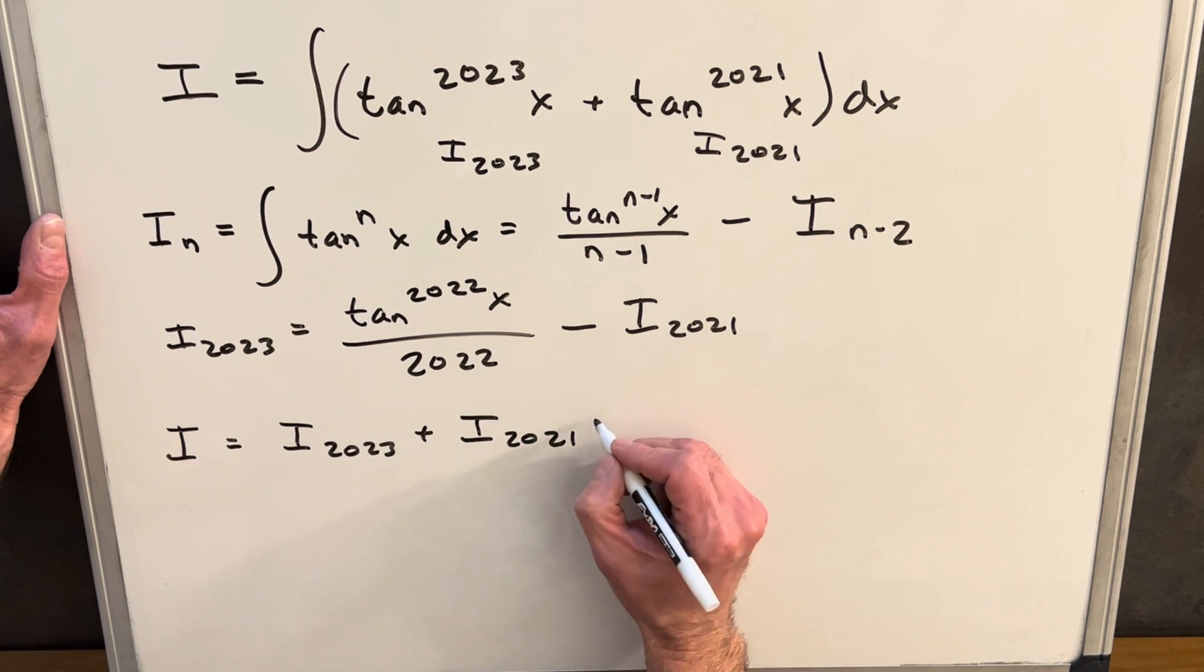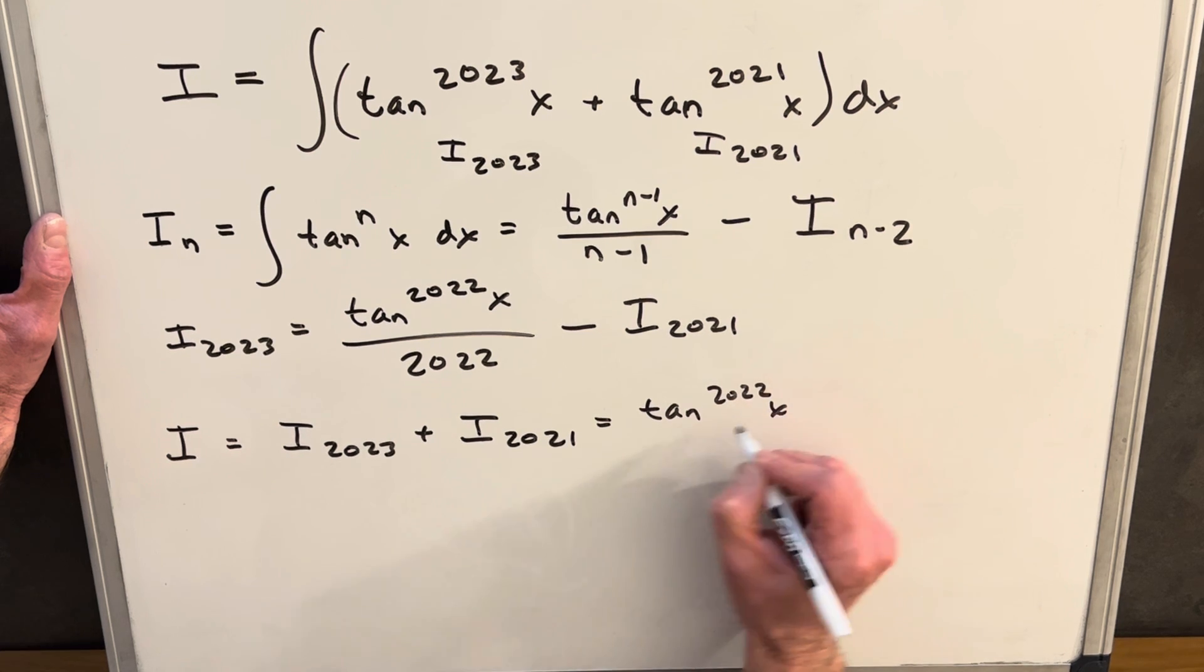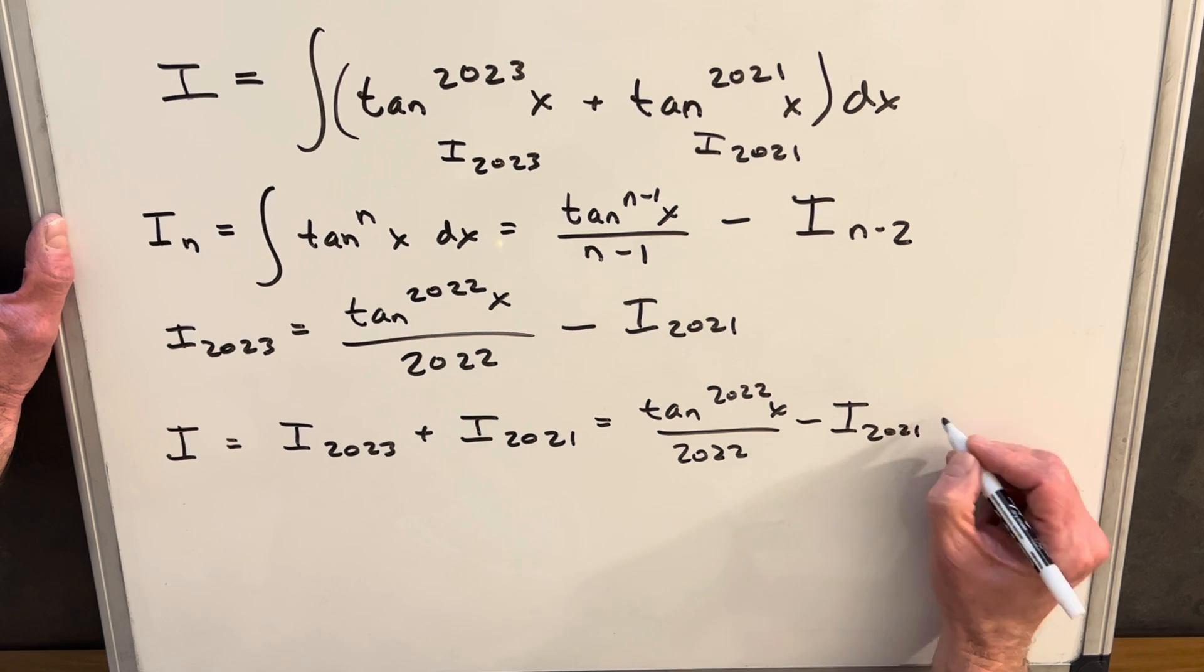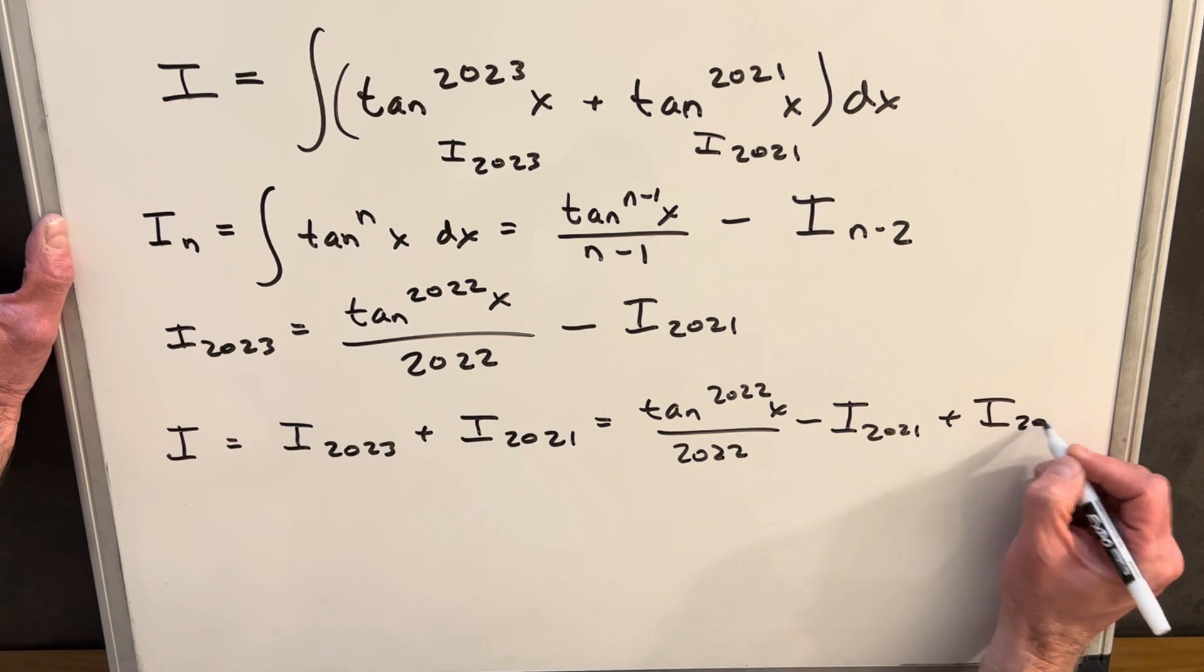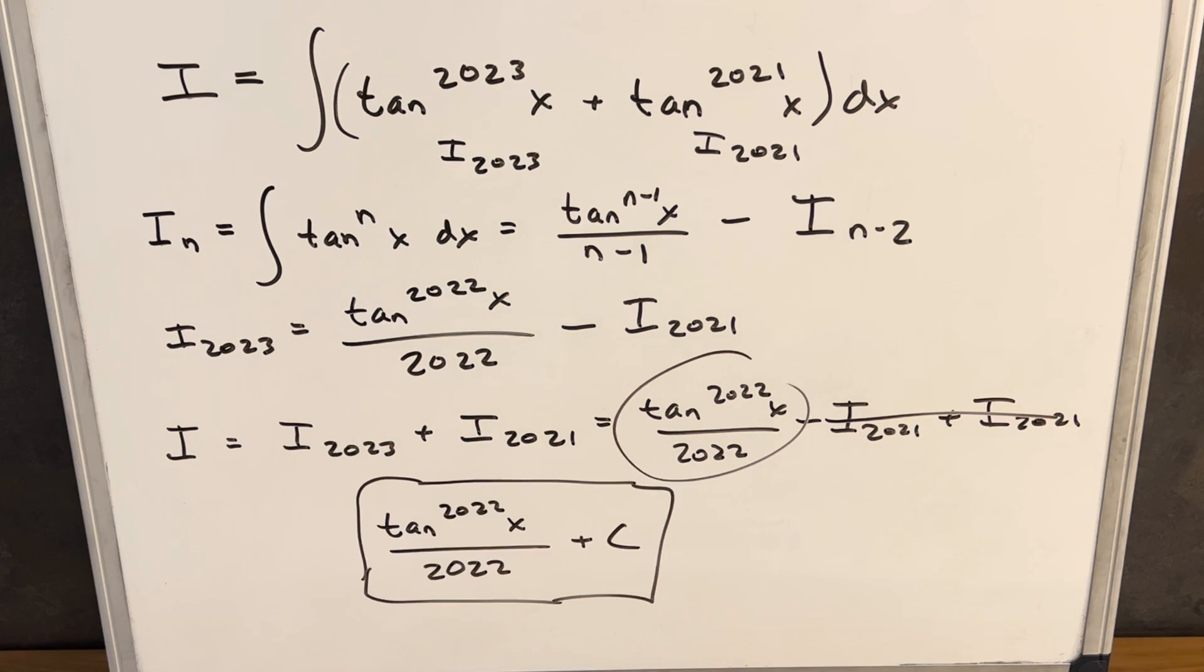We know what 2023 is. It's going to be tan 2022x over 2022 minus i 2021 plus i 2021. These things cancel. So our final solution is going to be tan 2022x over 2022 plus c.